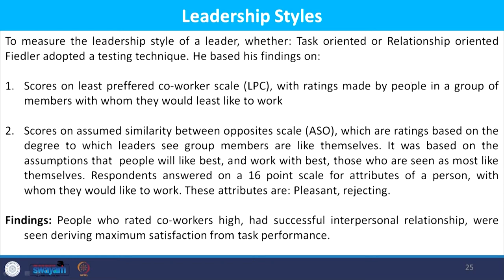Scores on the assumed similarity between opposites (ASO) scale are ratings based on the degree to which leaders see group members as similar to themselves. It was based on the assumption that people will work best with those seen as most similar to themselves. Respondents answered on a 16-point scale for attributes of a person with whom they would like to work, with situations ranging from pleasant to rejecting or comfortable. Findings showed that people who rated co-workers very high had successful interpersonal relationships and were seen as deriving maximum satisfaction from task performance, meaning the task was assumed to be highly effective.